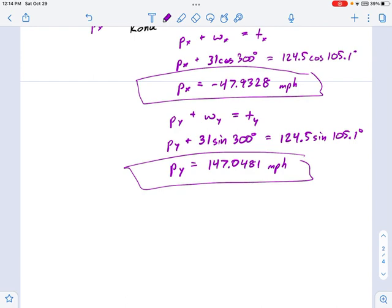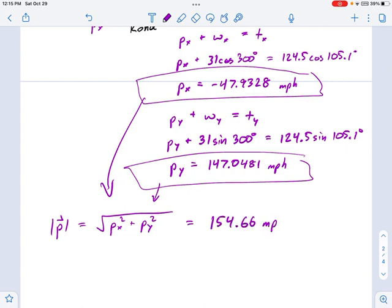If I just put those together with a little Pythagorean, I can come up with the true plane speed and heading. For this one, we just remember that the magnitude of a vector is equal to the square root of the squares of its components. That's going to be equal to, if you plug in these numbers here, Py and Px, I got 154.66 miles per hour. So, that's one of the things we were looking for. That's how fast the plane has to fly.